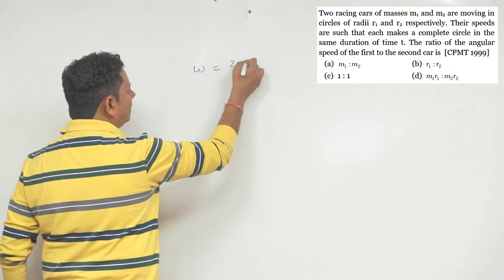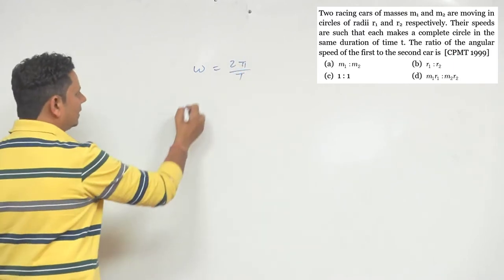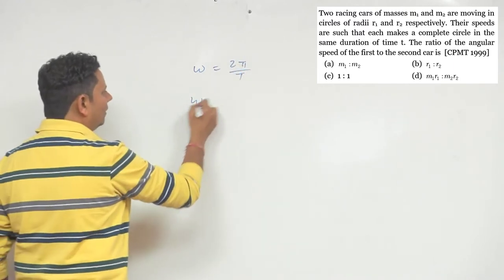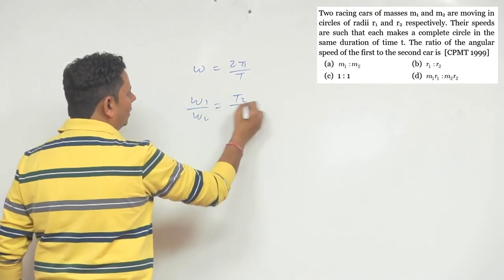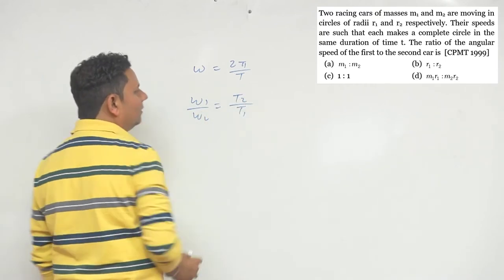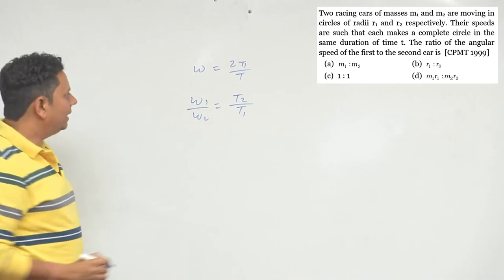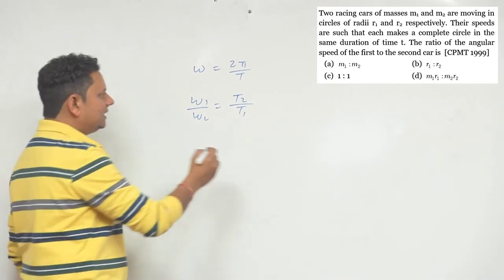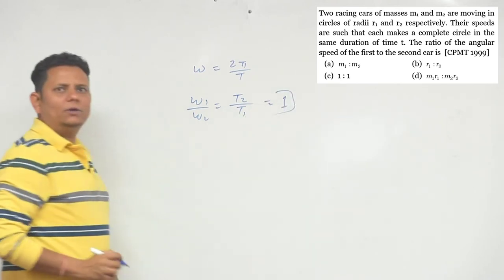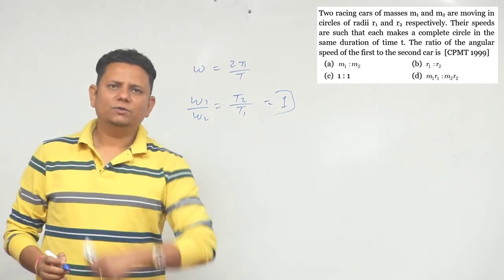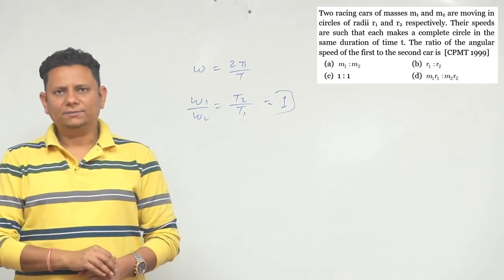The angular speed is given as 2π/t for both cars. So the ratio of angular speeds will be equal to 1:1, which means option C is the correct answer.